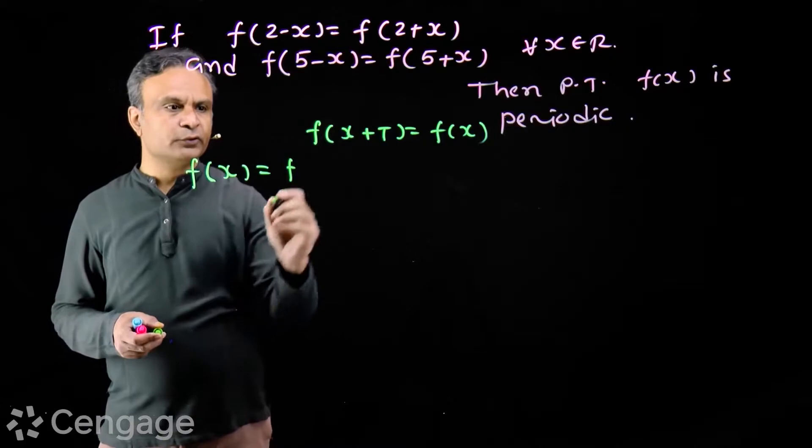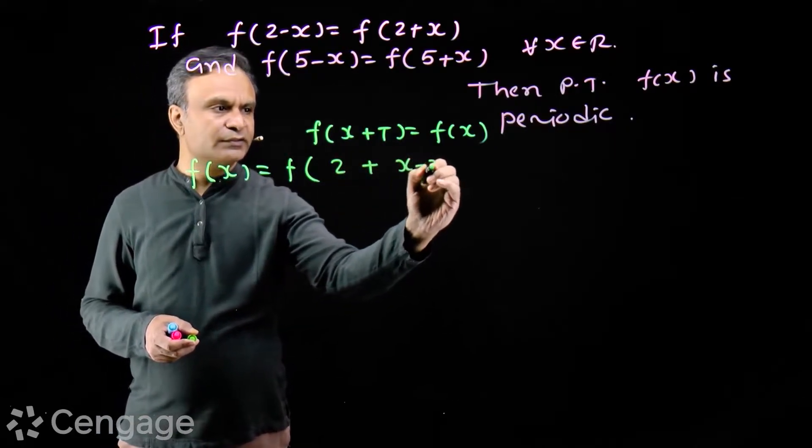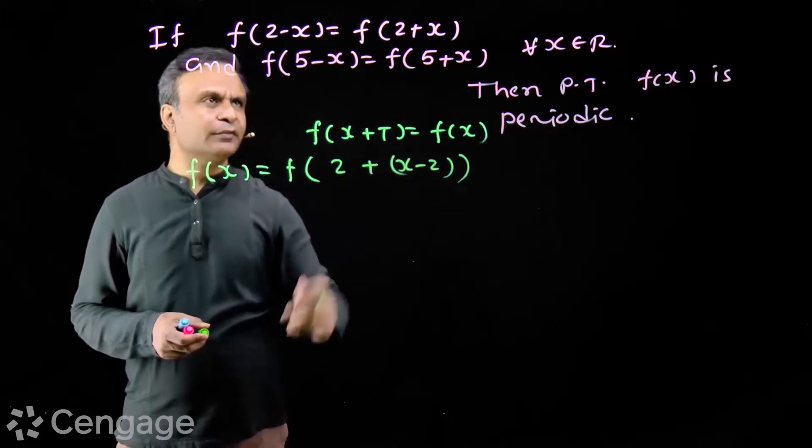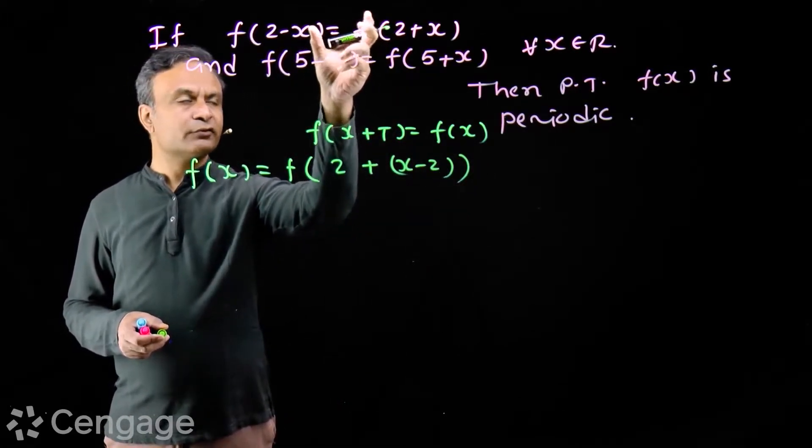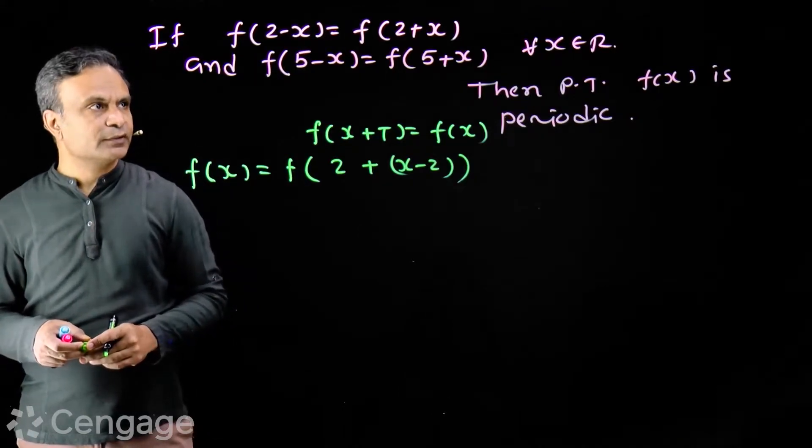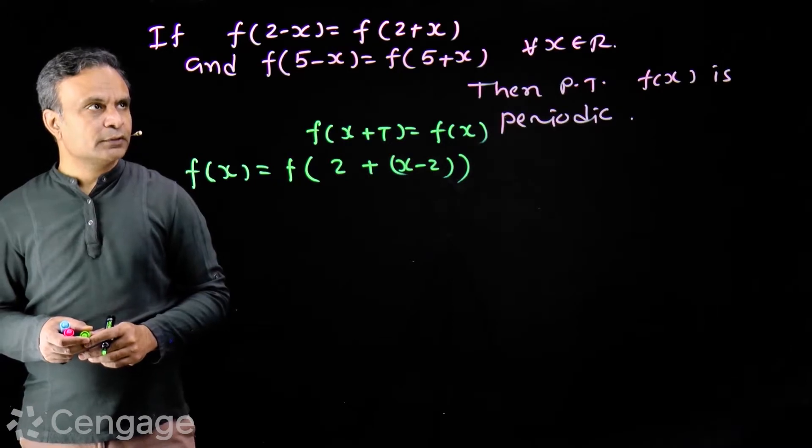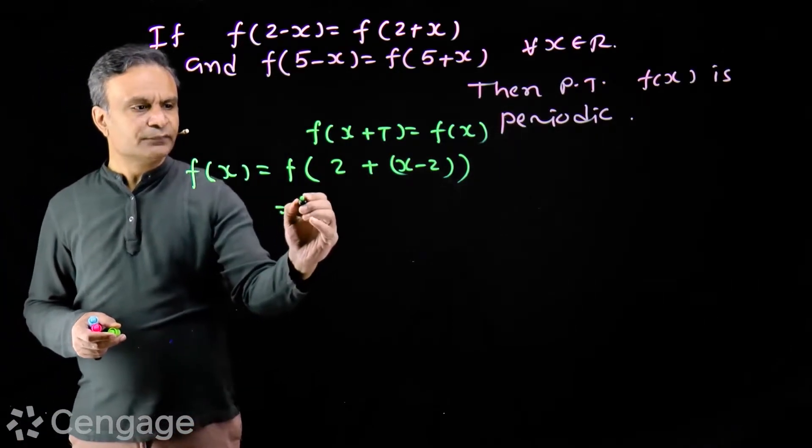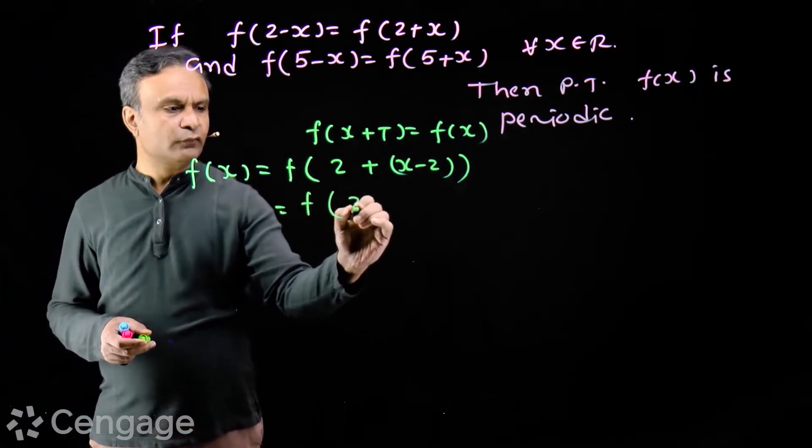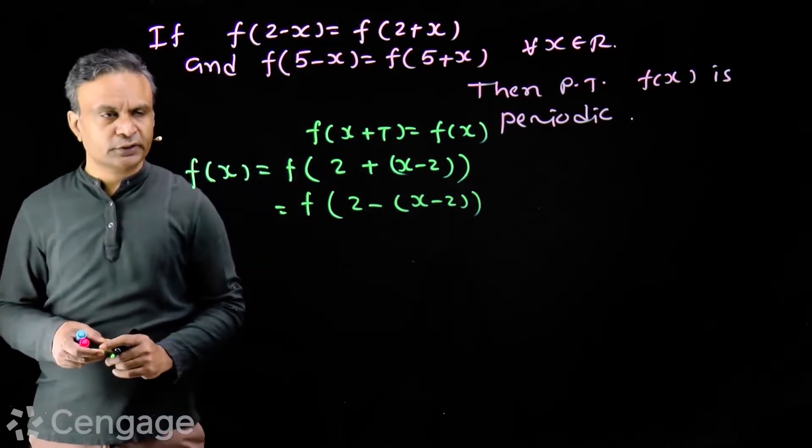We write like this: f(2 + (x-2)). We have to use this relation, this equation, so we have to do something. We have 2 added and subtracted. Now can I say this is equal to f(2 - (x-2))?